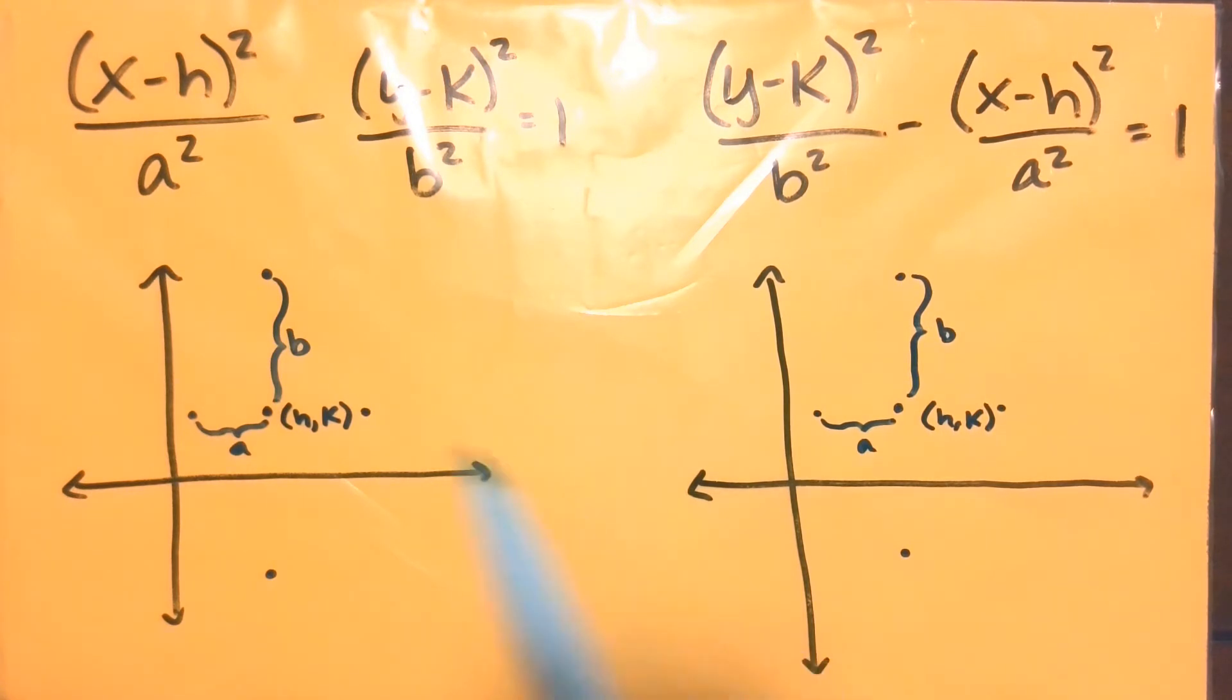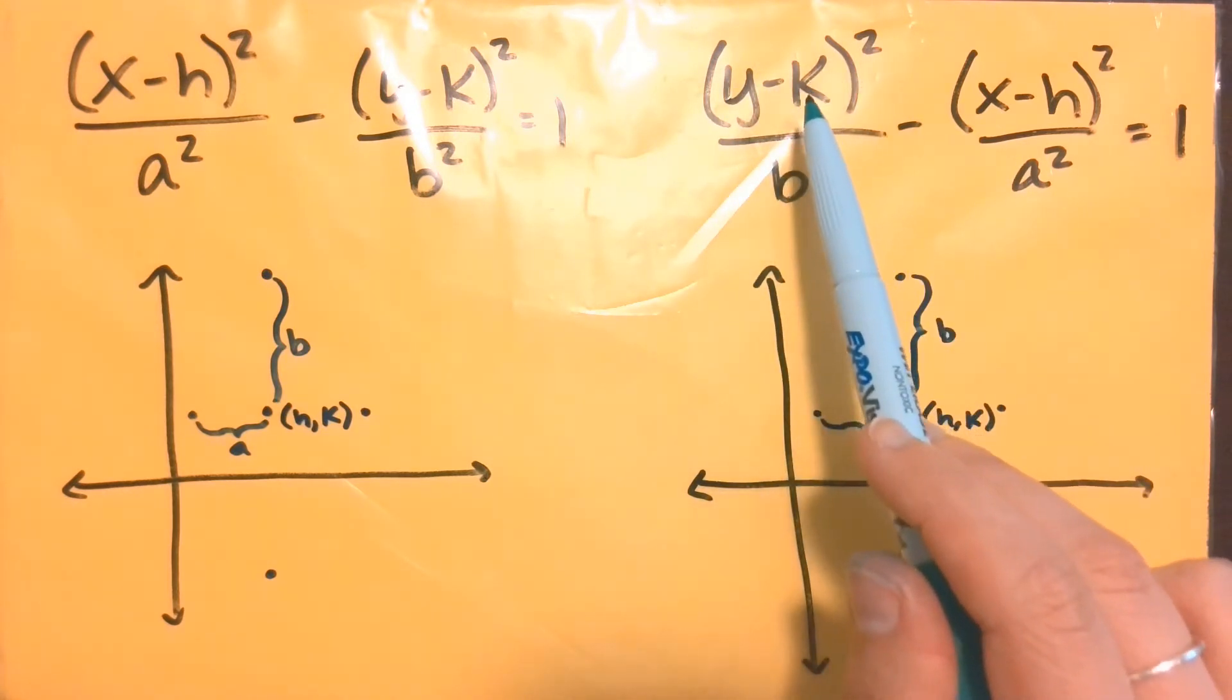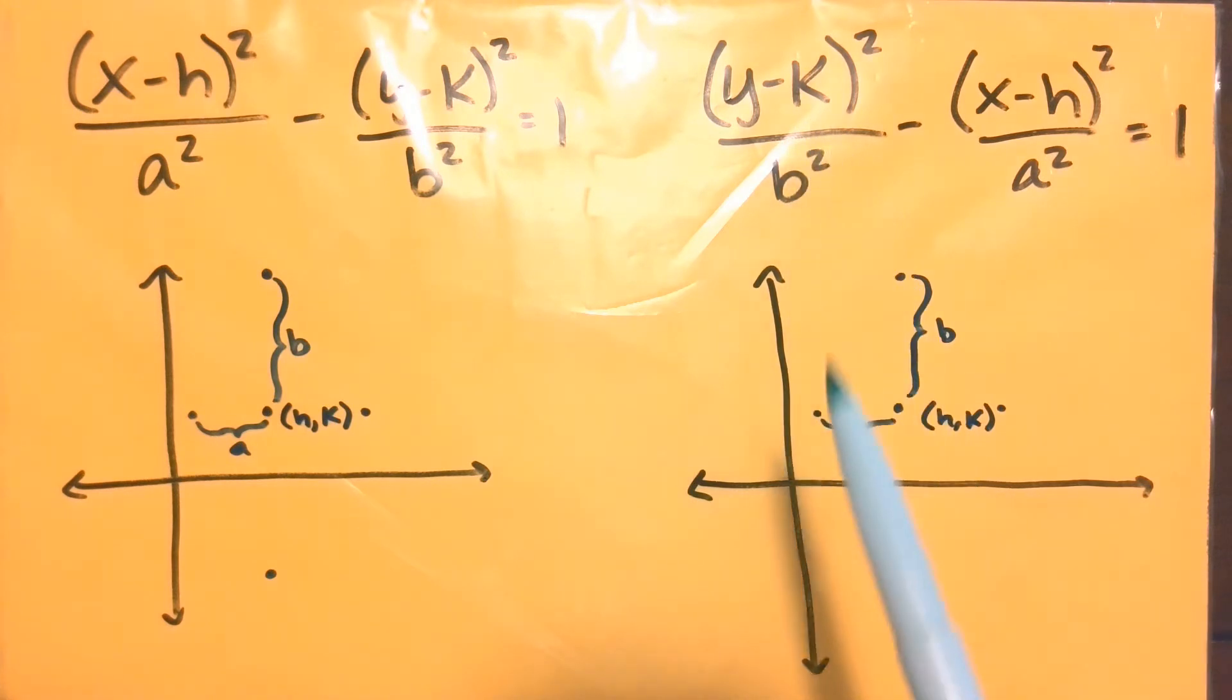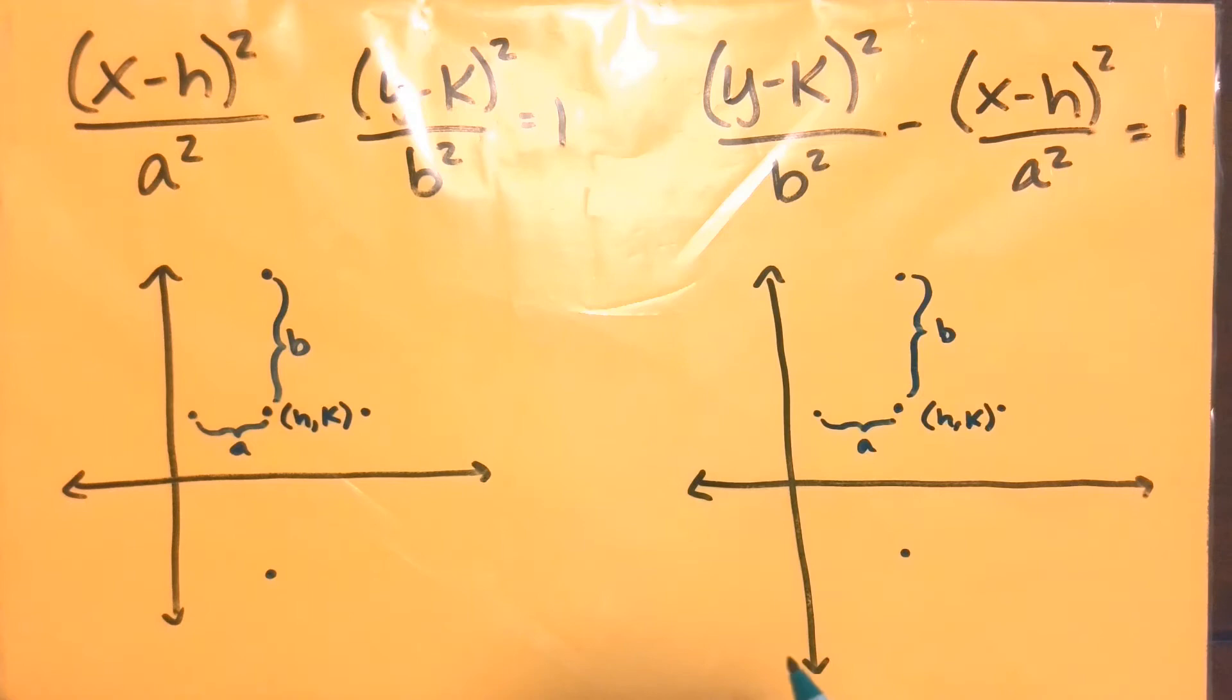Notice on both of these we're still going to have that center at (h,k), so even when that y term comes first, that is still with the y value for the center. So nothing has changed there. You do have to be more careful with that though. So center still is at (h,k).